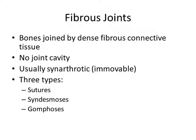Cartilaginous joints have two types: synchondrosis and symphysis. In synchondrosis, the bones are attached to each other by hyaline cartilage. In symphysis, the bones are connected by fibrocartilage. The difference is the type of cartilage: hyaline for synchondrosis, fibrocartilage for symphysis.